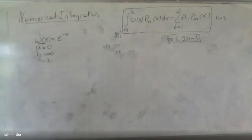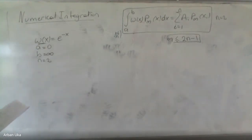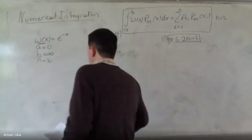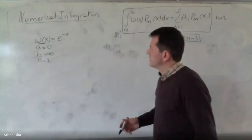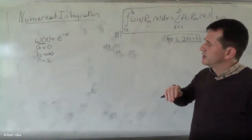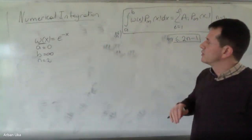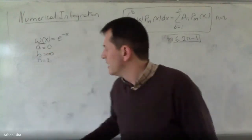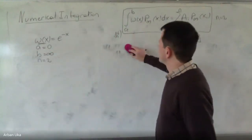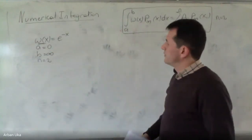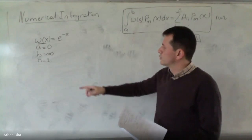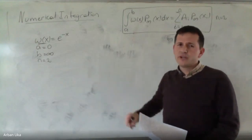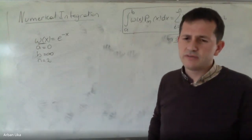Now, if you want to use two terms in the summation, every relationship that you are going to write down is strongly related to the others. My first question to you is: if we are going to use two terms, how many unknowns do we have?